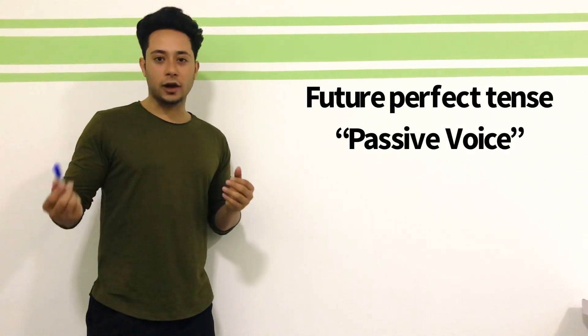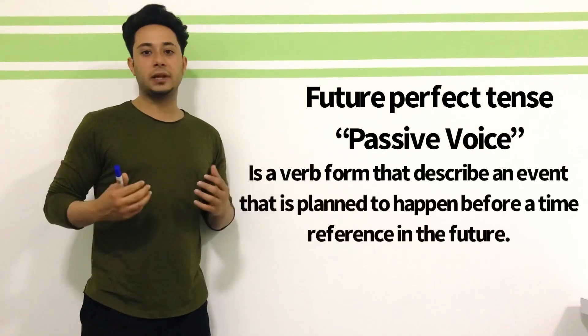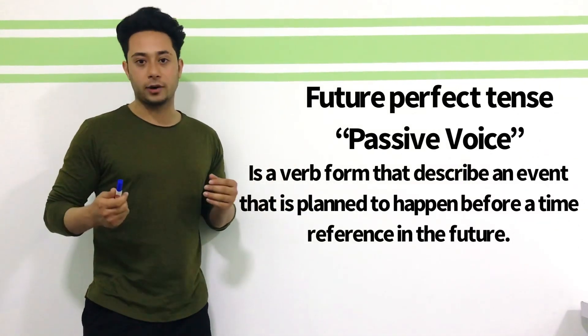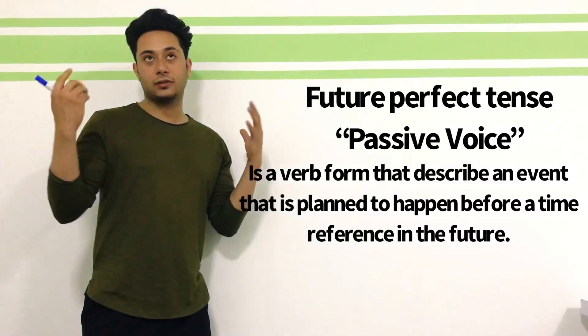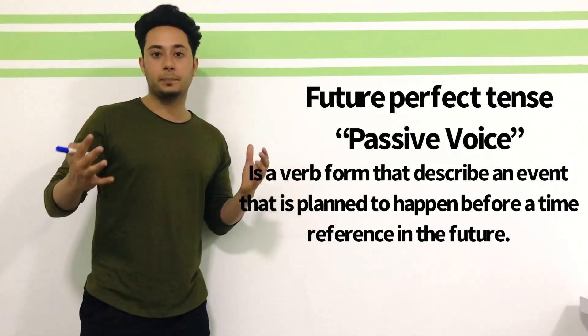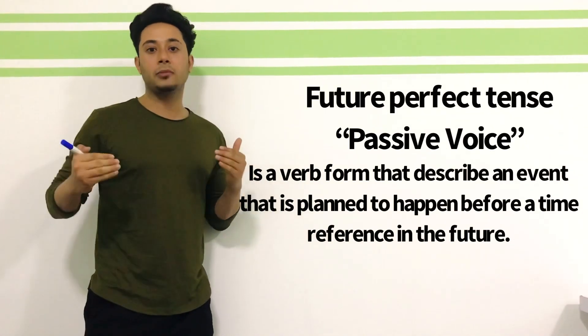Dear old friends, before talking about the passive voice of future perfect tense, I need to explain or define future perfect tense. What is future perfect tense? Future perfect tense is a word form that describes an event planned to happen before a time reference in the future.